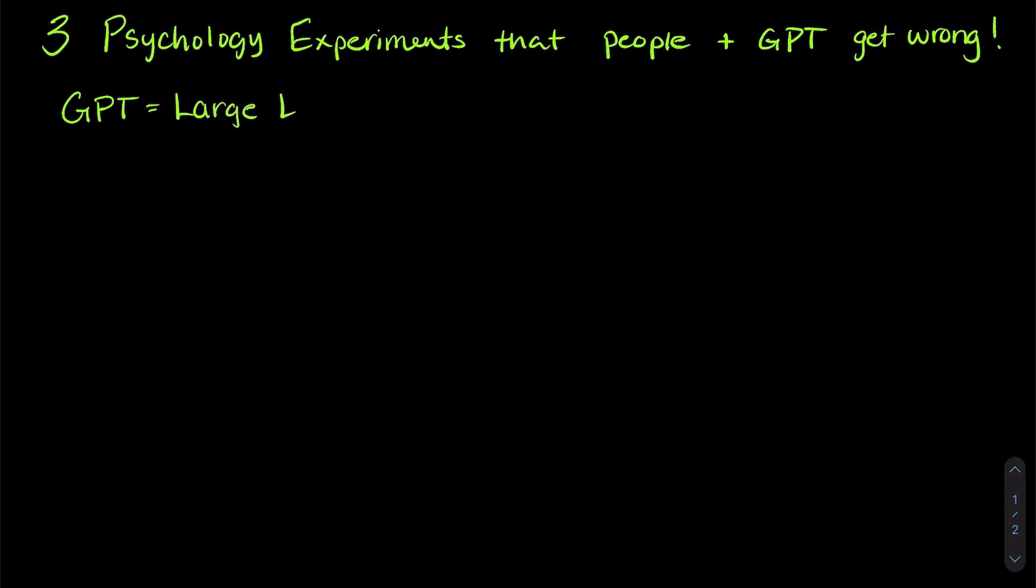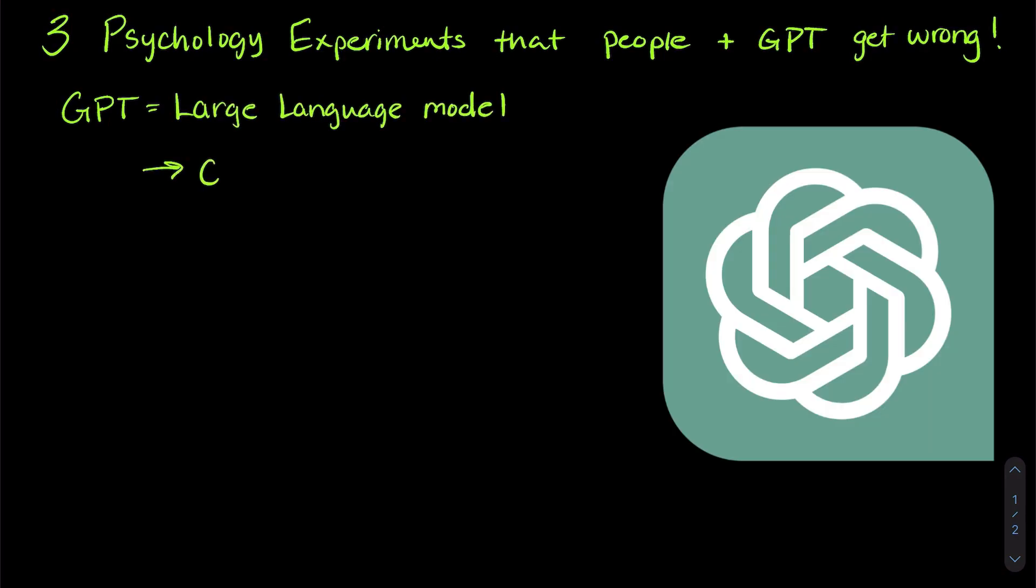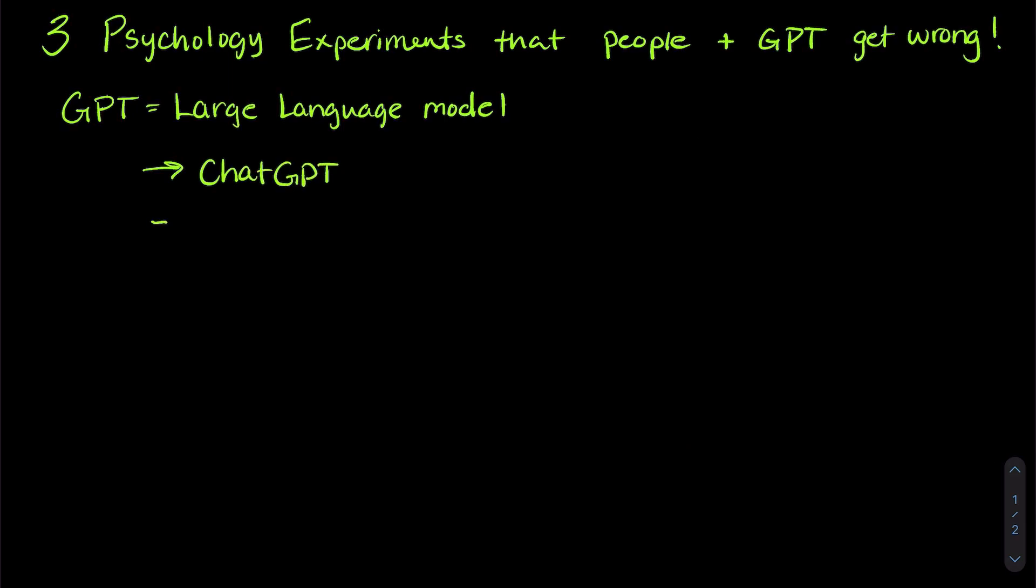GPT is what we call a large language model. And it's models like these that power things like ChatGPT, which you're probably familiar with. And these models can do some really cool stuff, like predict text, they can solve problems, and they can even make decisions.